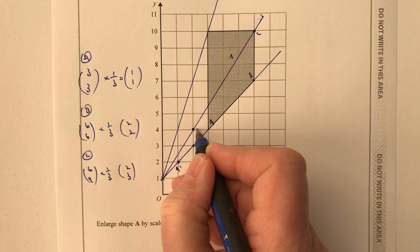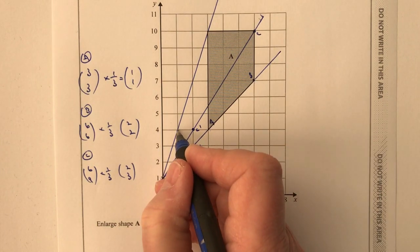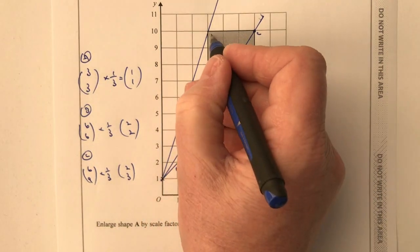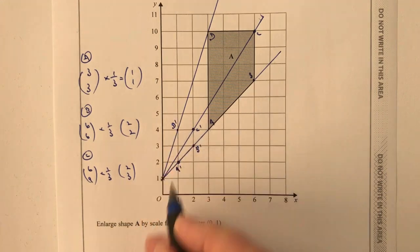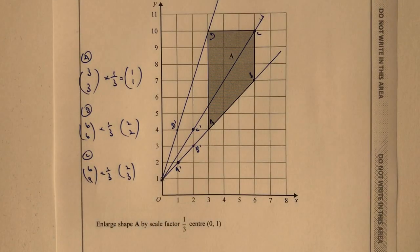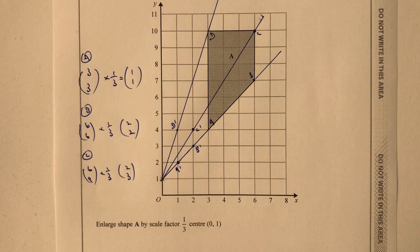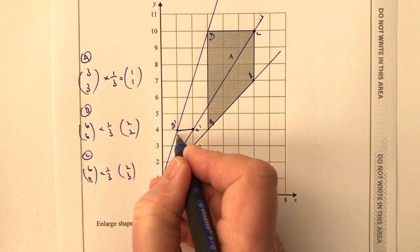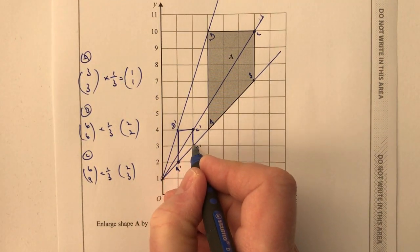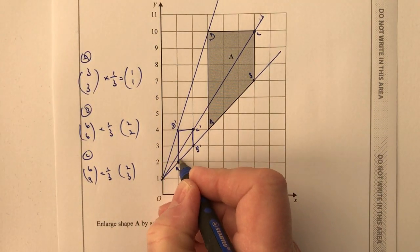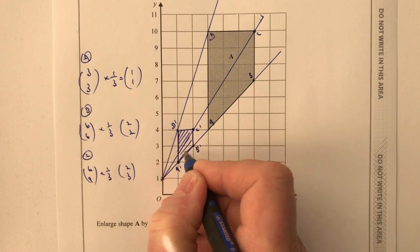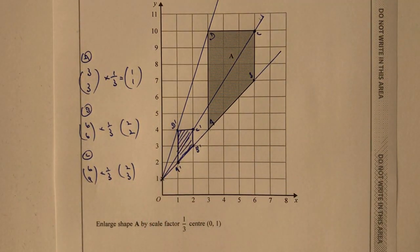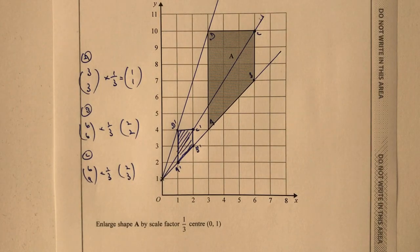You can take a guess that point D is going to be in the corresponding position, and you can check that by doing the actual vector. When we draw in the shape, we've got an enlargement of a third — it's a third of the size and it's in the right place from the centre.